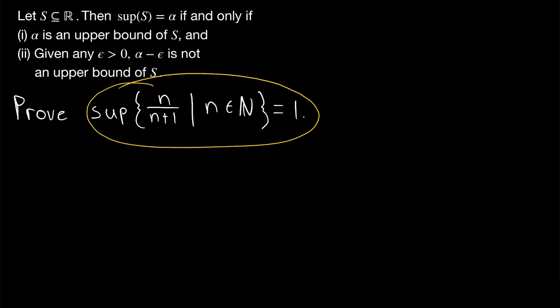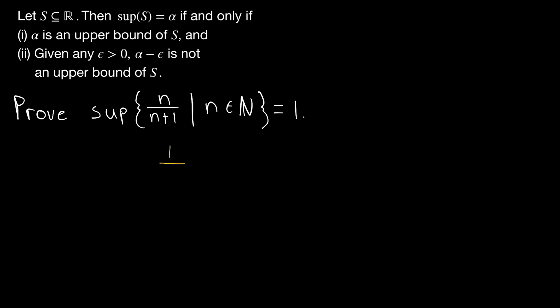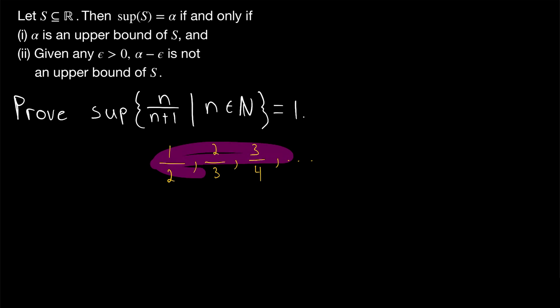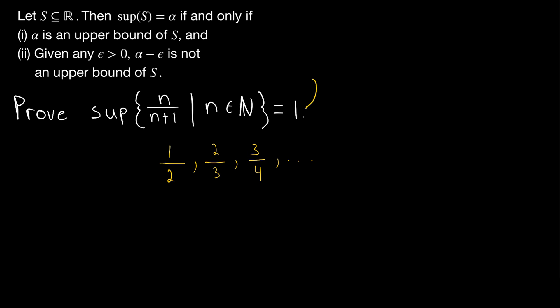Let's take a quick look at what the elements of this set actually look like. They're just n over n plus 1 for natural numbers n, so we'd have 1 over 2, 2 over 3, 3 over 4, and so on. You may notice that elements get closer and closer to 1 for larger values of n, which is why you might suspect the supremum is equal to 1 in the first place.